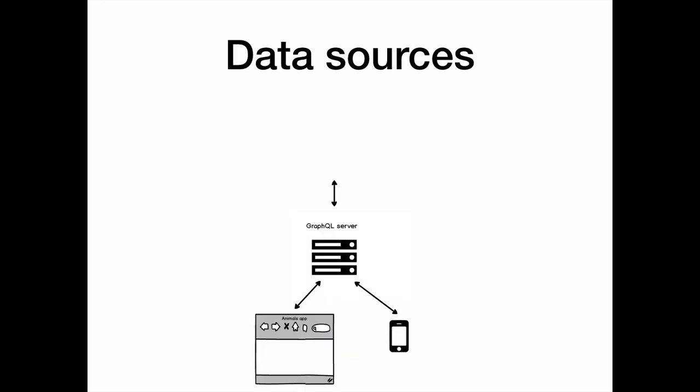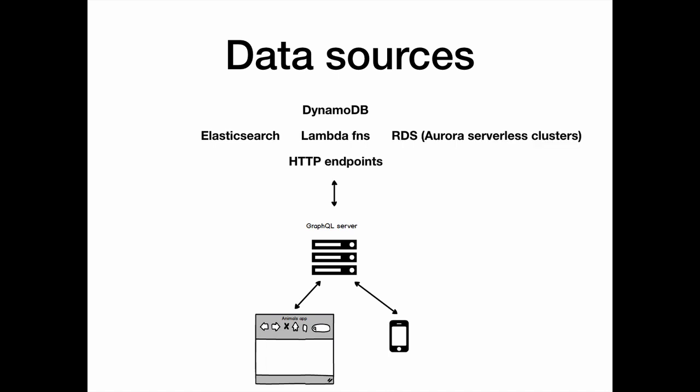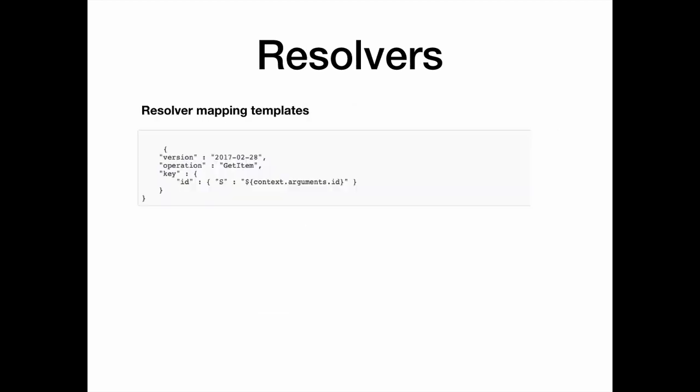Let's talk more about the GraphQL service itself. AppSync supports several backend data sources such as DynamoDB, Elasticsearch, Lambda functions, RDS, and any HTTP endpoint that's on the public internet and whose CA is recognized by AppSync. The mechanism used to express the translation between backend data sources and GraphQL is resolver mapping templates.